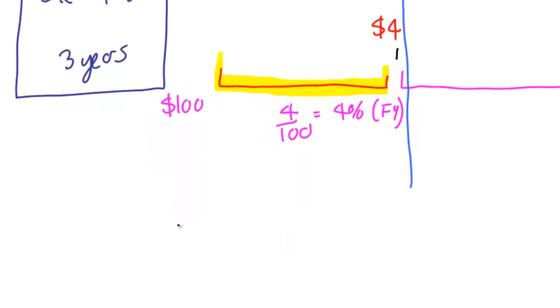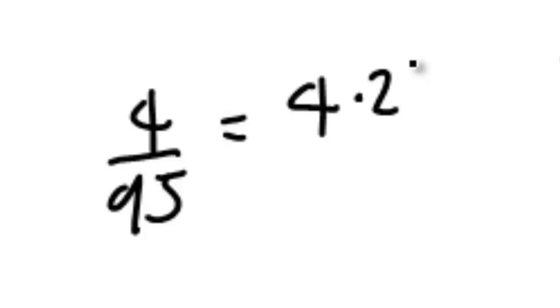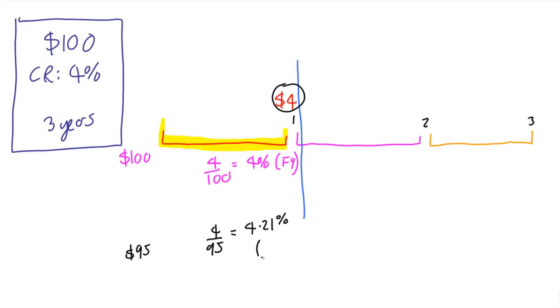Now another interesting case happens when we pay $95 for the particular bond. Well in this case we still get the same $4, but this time to get the flat yield we divide by 95. And if you remember from the last video, that came back at a flat yield rate of 4.21%. So it's slightly more, it's slightly more because we're getting 4 but we're only paying 95.